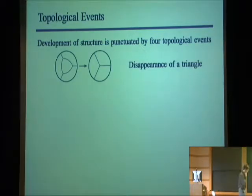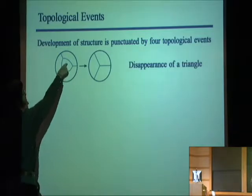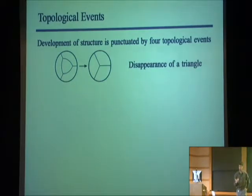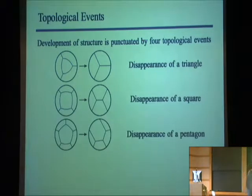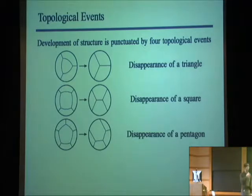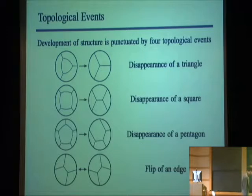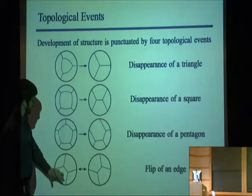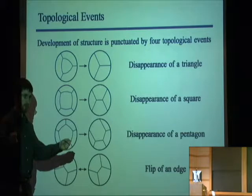We see that the bubble system is punctuated by four events. Notably, we don't have disappearances of diagons — there's no mechanism by which a diagon can appear, since there's no way for an edge to spontaneously go to length zero. You do still have disappearances of triangles. Interestingly, you can show that four-sided bubbles and five-sided bubbles can shrink continuously to a point without shedding any sides. You also have the edge flip, which occurs in both systems. In the grain growth system every motion was continuous; in the bubble system there's a jump associated with every topological event because it must move to mechanical equilibrium.